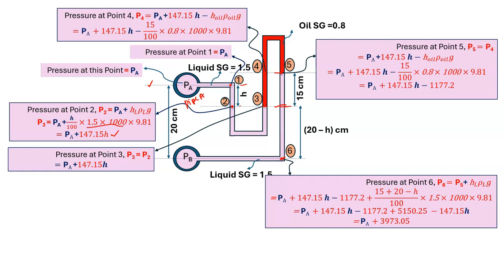At point 6, pressure P6 equals P5 plus HL·ρL·g, where the total height HL is (20 minus H plus 15) cm. So P6 equals PA plus 147.15·H minus 1177.2, plus (15 + 20 − H)/100 × 1.5 × 1000 × 9.81. Calculating this, P6 equals PA plus 397.305 Pascals.